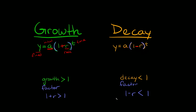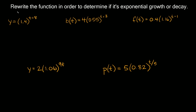Now let's jump into some examples. These say: rewrite the function in order to determine if it's exponential growth or decay. You might notice something different with the exponent — normally we just have t by itself, but here we have variations like t+8, t+3, t-1, 9t, and t/5. Whenever you're determining growth or decay, you have to make sure the exponent t is by itself.